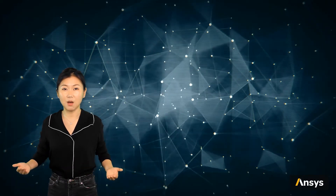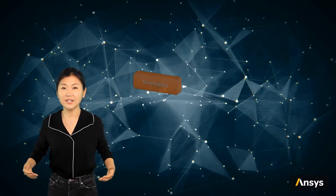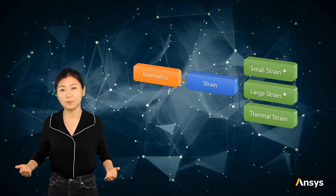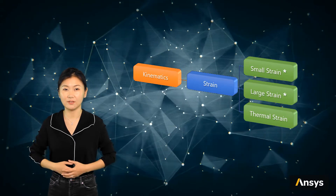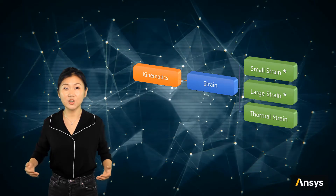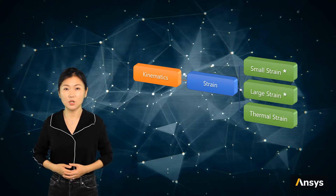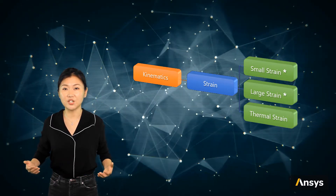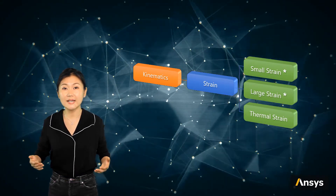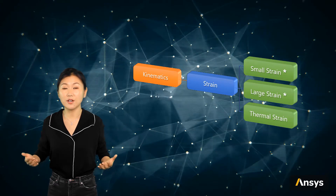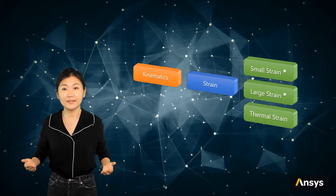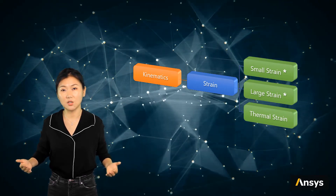Let's expand these blocks further. In finding the solution of a problem in solid mechanics, we need a way to record the change in shape or geometry of deformation. This falls into the study of kinematics. Particularly, for flexible bodies, we use strain to represent the deformation of material excluding rigid body motion. In this course, we will discuss the general idea of strain and also strain for small deformation and large deformation problems. The topics in this course are marked with stars on this map.